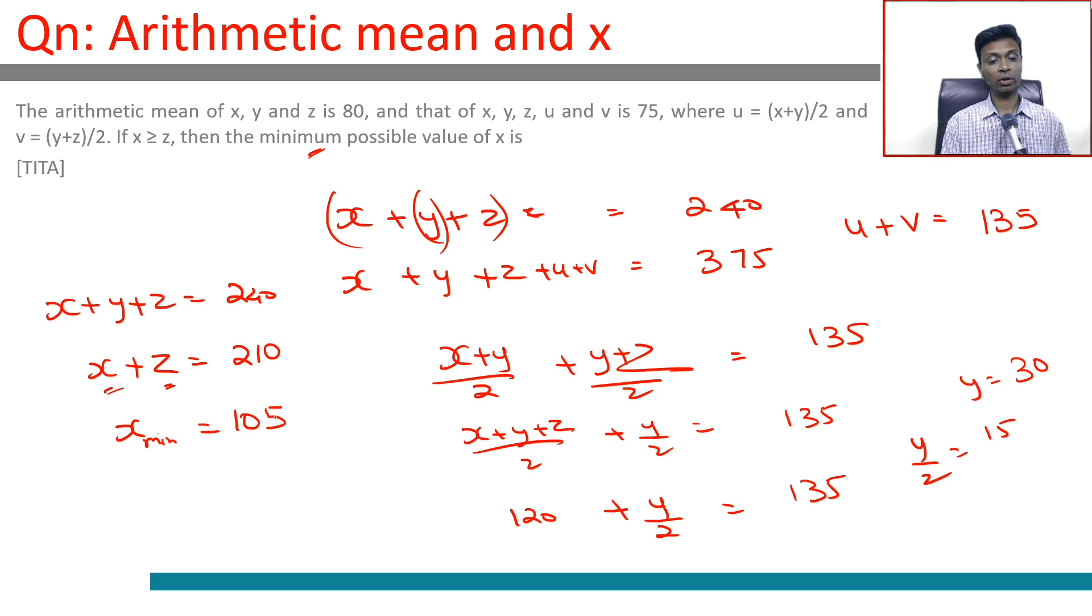Therefore, x_min = 105. The best case scenario is when x = z = 105 and y = 30. We can verify all conditions are satisfied. The minimum value of x is 105.